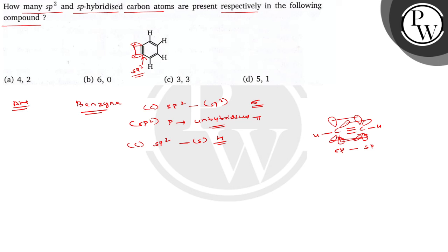If you count the number of sp2 carbons: one, two, three, four, five, six. There are six sp2 carbons and no sp carbons. So the correct option is 6 and 0, which is option (b). I hope you understood well. Best of luck!